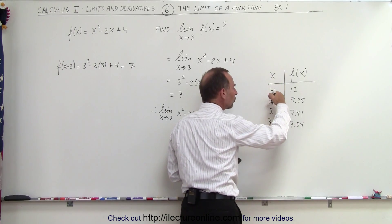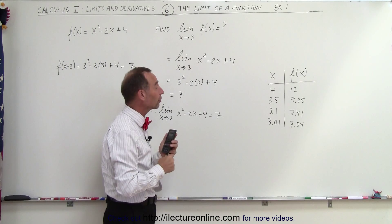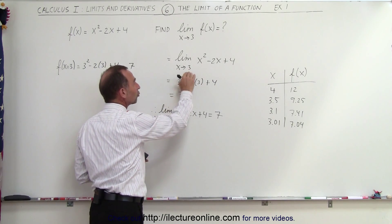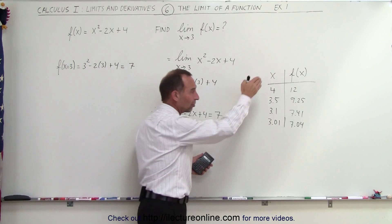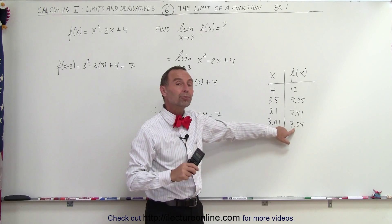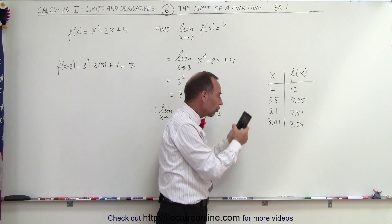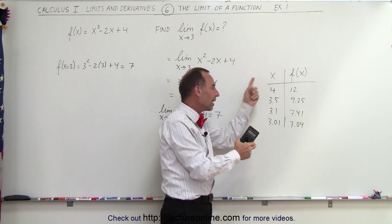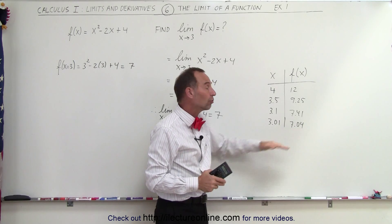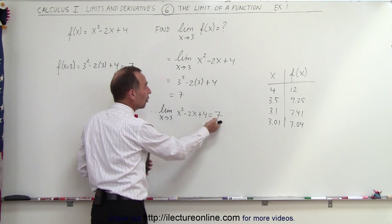Now notice, as I get closer and closer to 3, if I allow x to get closer to the value of 3, which is ultimately what I'm trying to do, I'm trying to find out the value of the function as x approaches 3. Notice, by just simple inspection, I can see that the value for the function seems to be approaching the value of 7. So that's what we mean by the limit. As we get closer to a particular value that we want to plug in for x, we get a particular value for the function. In this case, it looks like it is 7. And then ultimately, when we plug in the value of 3 into the function, we get 7.